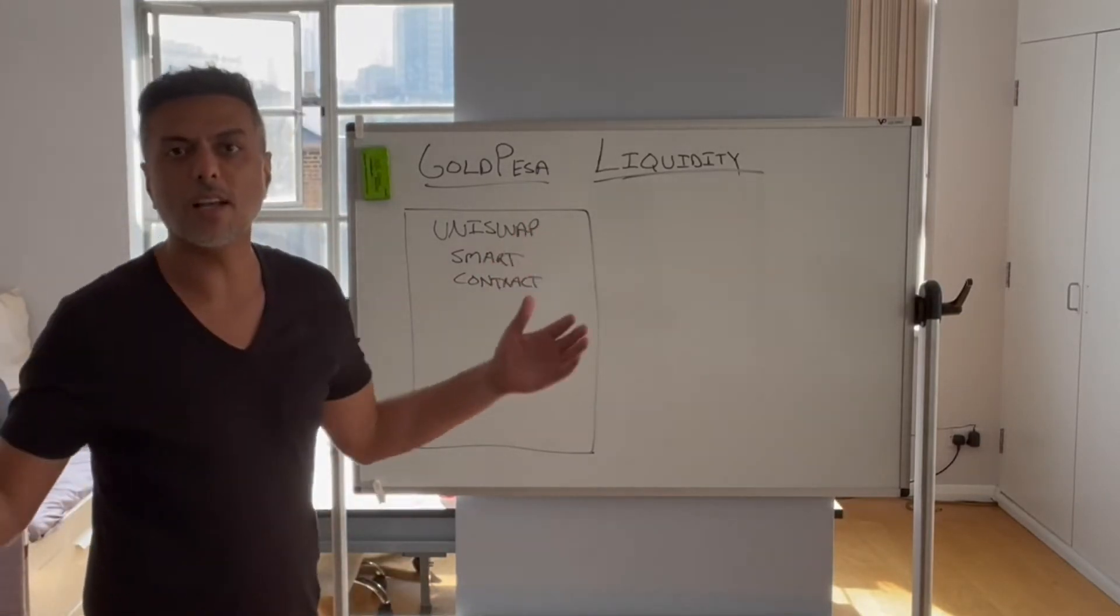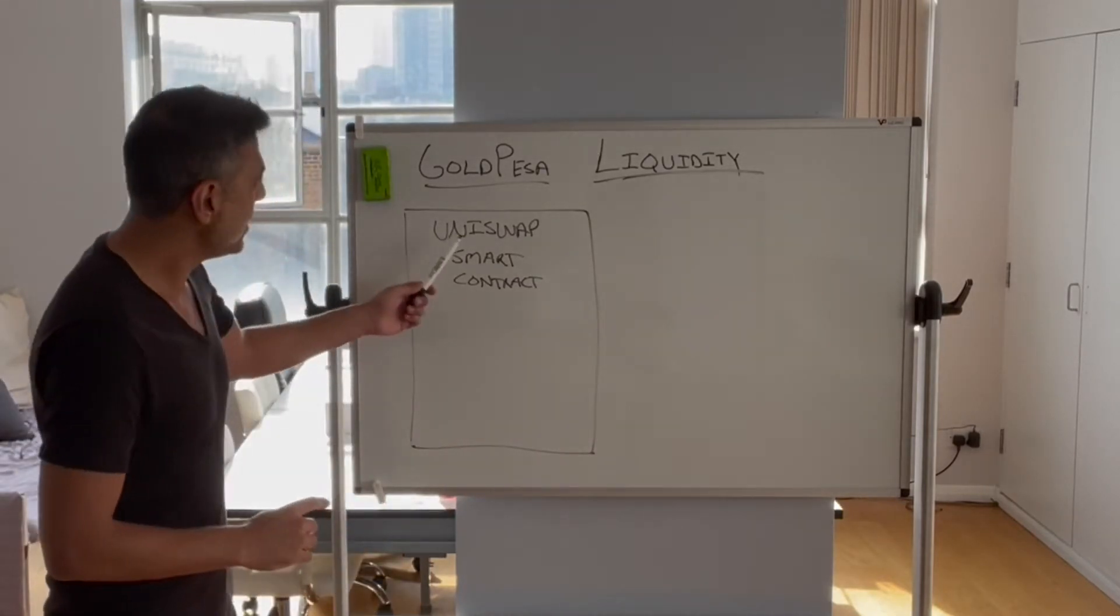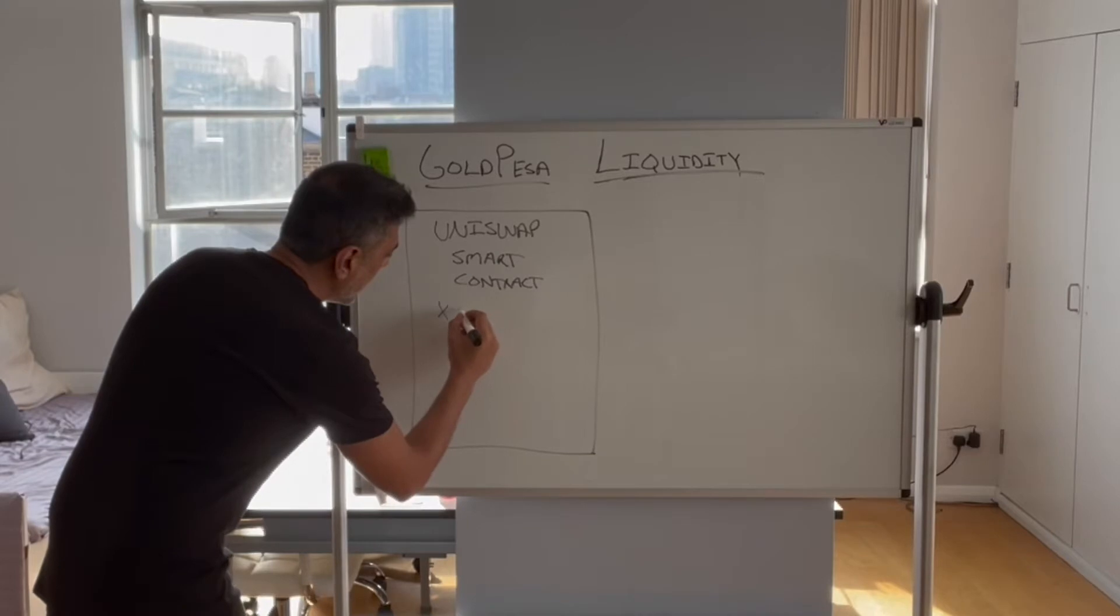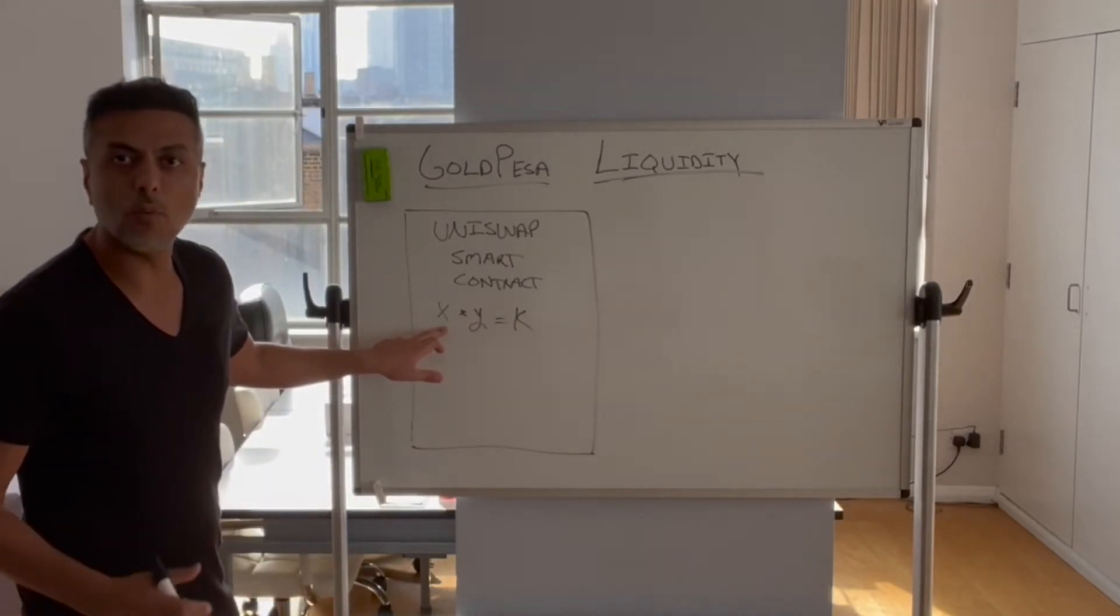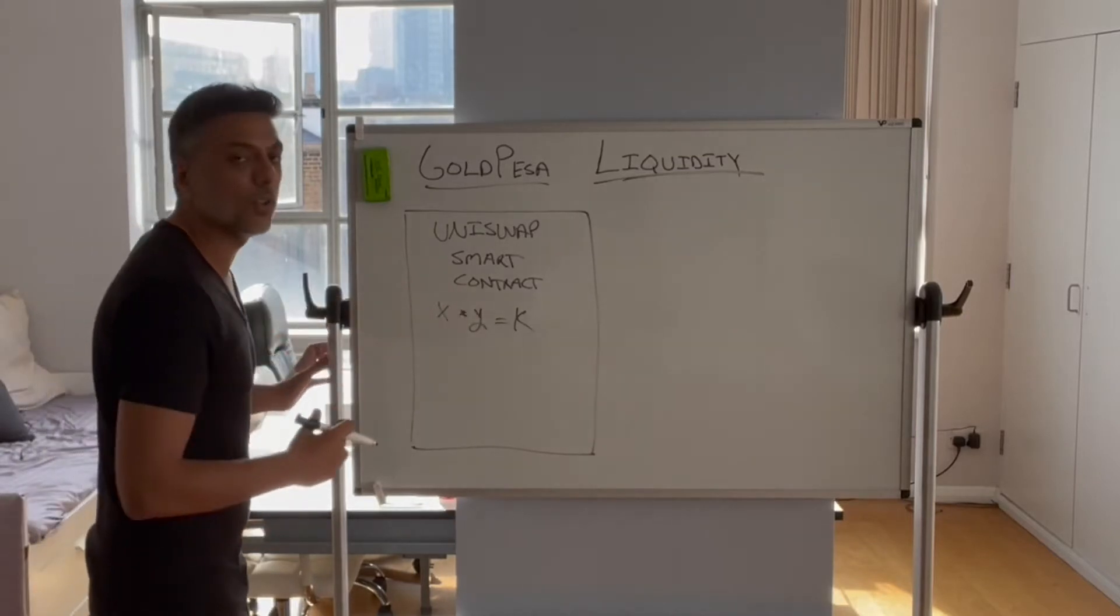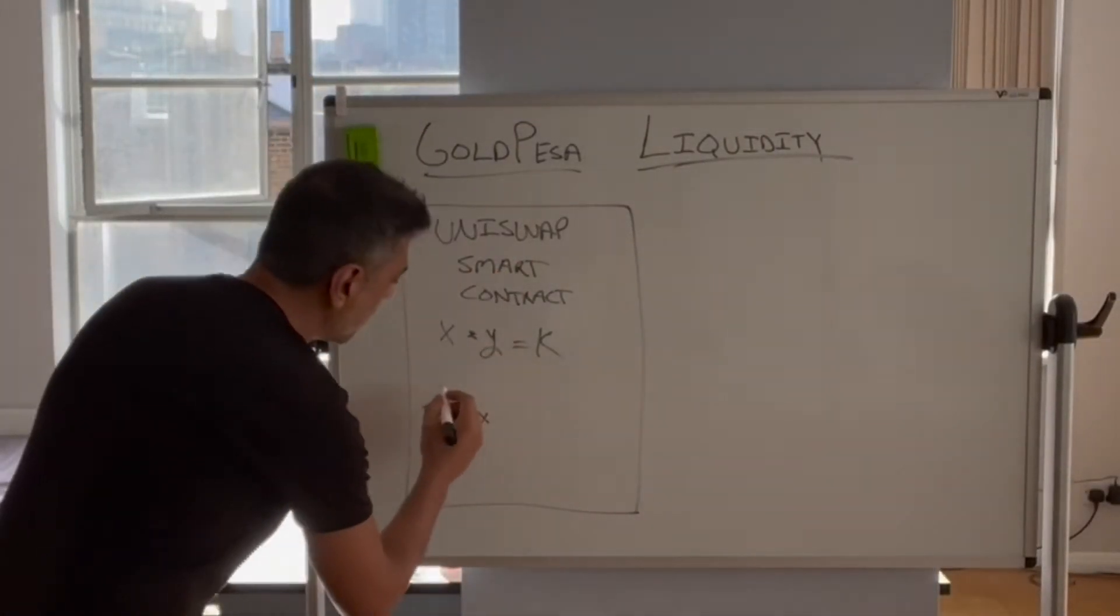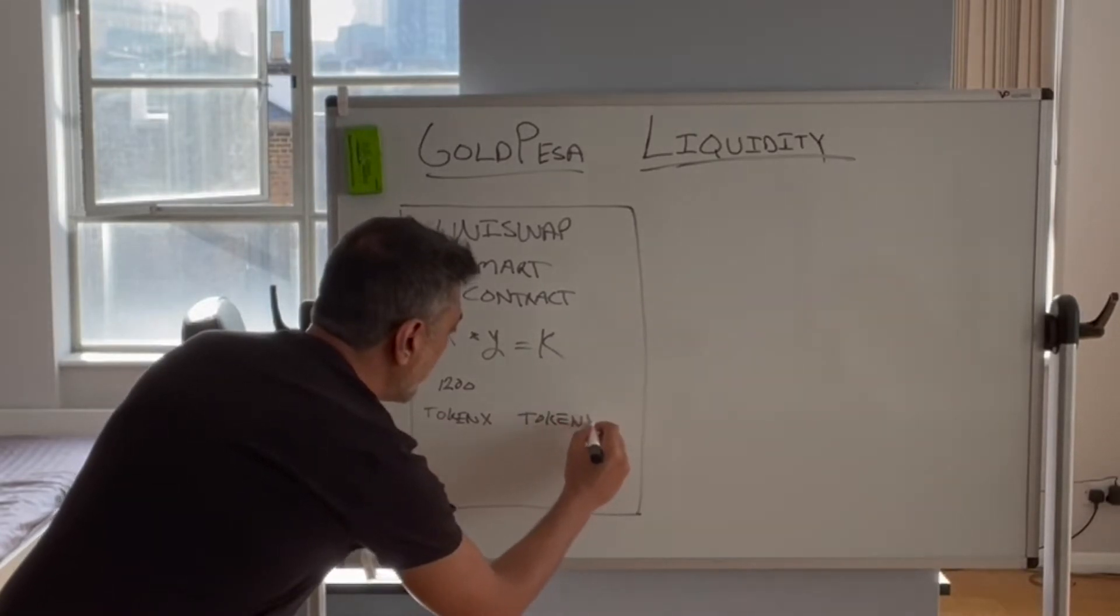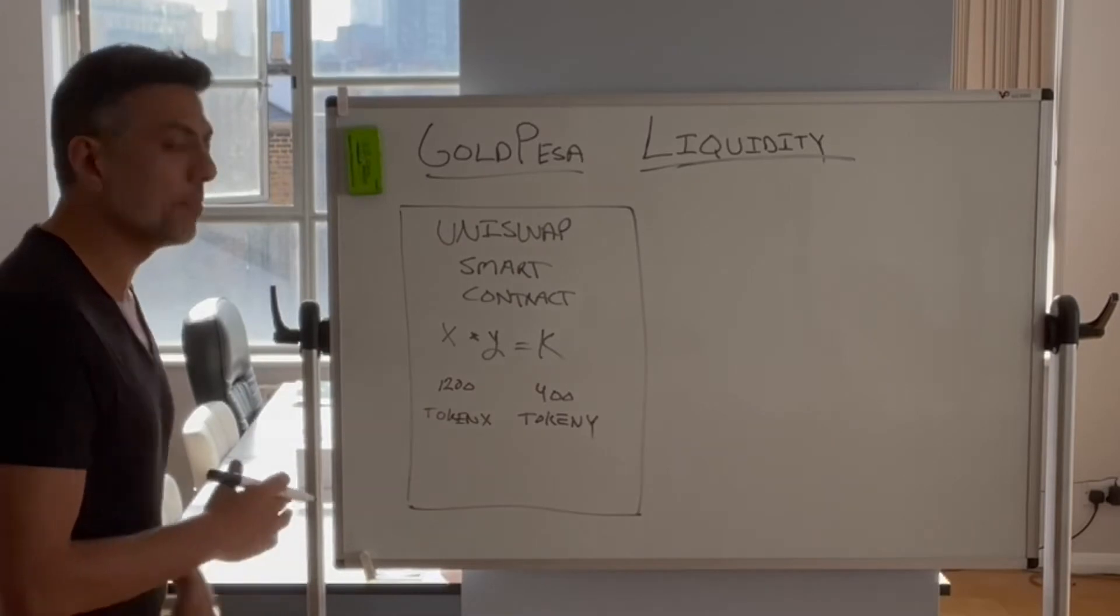Once you deploy these liquidity pools or Uniswap smart contracts, they act like the reserve tokens at a Forex Bureau. This Uniswap smart contract uses a constant product formula, which is as simple as x times y equals k. So x is the number of tokens of one side of the pair, y is the number of tokens of the other side of the pair, and k is the constant product. For example, if we had token x inside this smart contract, we had 1200 of that. Then we had token y, which was 400. So this is the starting liquidity inside this smart contract, which is deployed onto the blockchain.